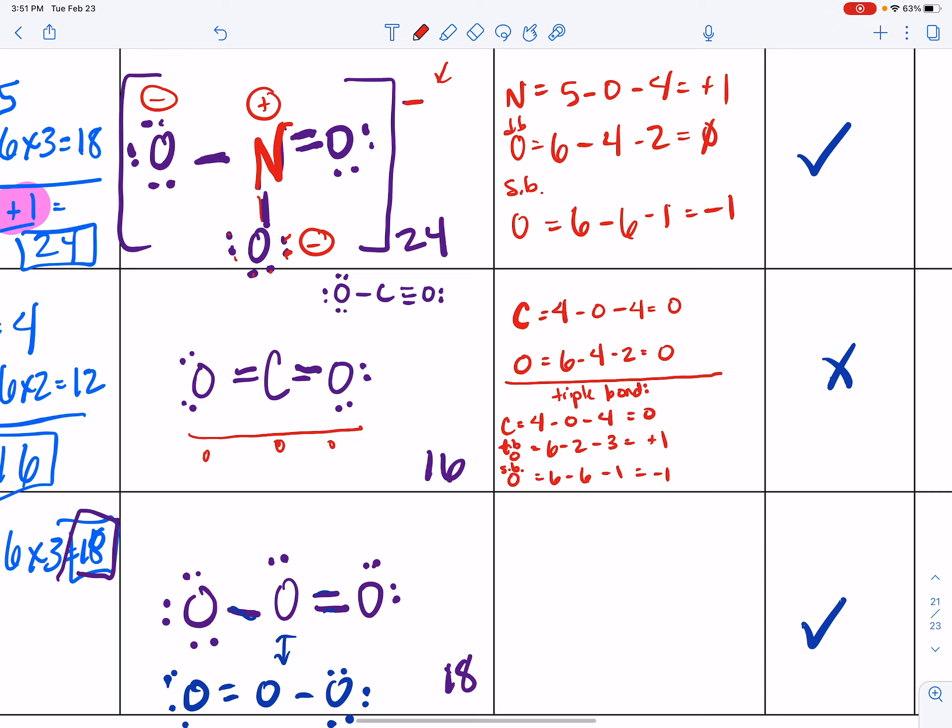So you can tell that this structure—again we've got a plus charge here and we've got a negative charge right there. So comparing the two, we would cross this out. This is not a possibility because we already have a structure that is zero, zero, and zero. So that is the best formal charge.